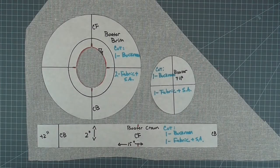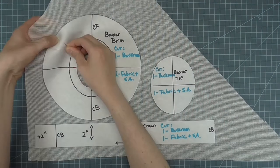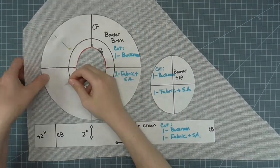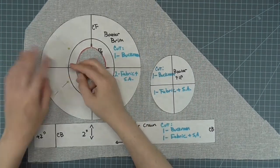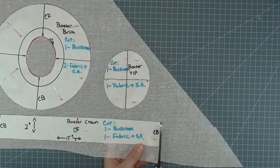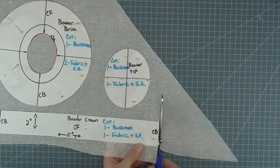Lay out your pattern pieces on a piece of buckram, keeping the crown on the lengthwise or cross grain, not the bias. Pin all the pieces to the buckram. Cut out all the buckram pieces.